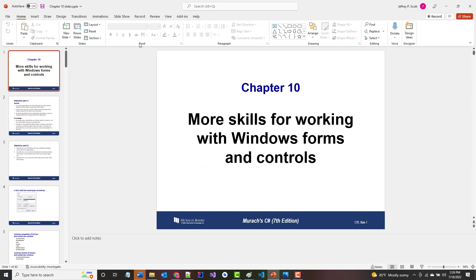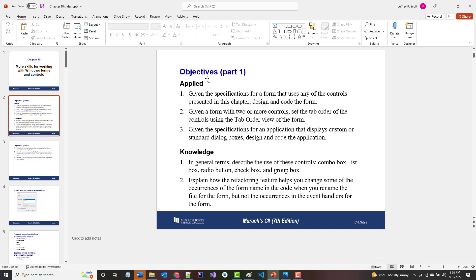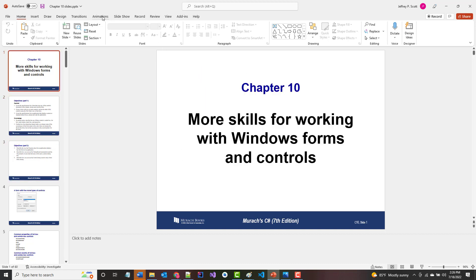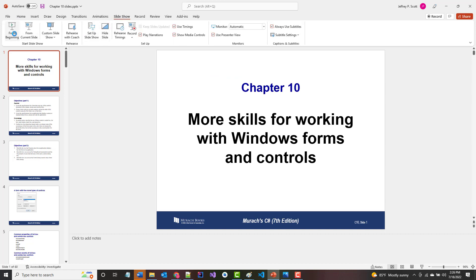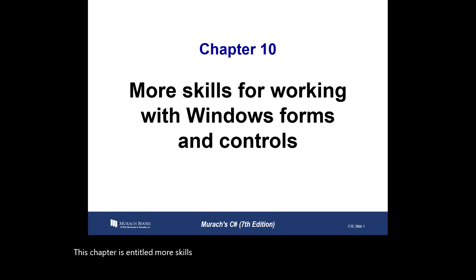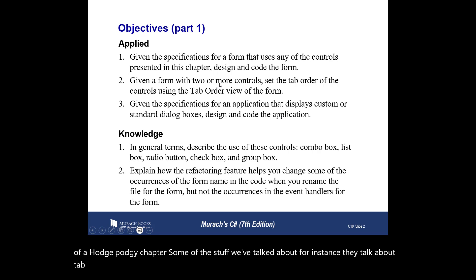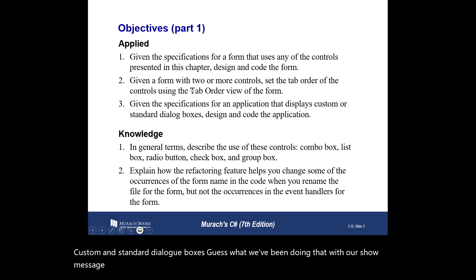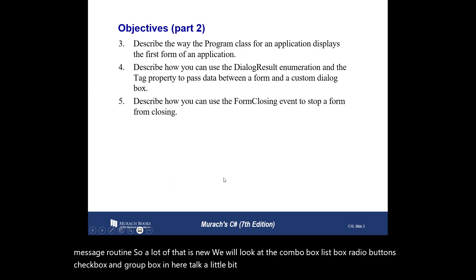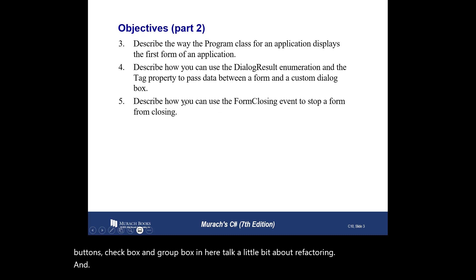The cover page shows what the chapter is about, and the next two slides have our objectives. This chapter is entitled 'More Skills for Working with Windows Forms and Controls.' It's kind of a hodgepodge chapter — some things we've talked about already, like tab order and custom dialog boxes with our ShowMessage routine. We will also look at the combo box, list box, radio buttons, checkbox, group box, and talk a bit about refactoring and using the form closing event.